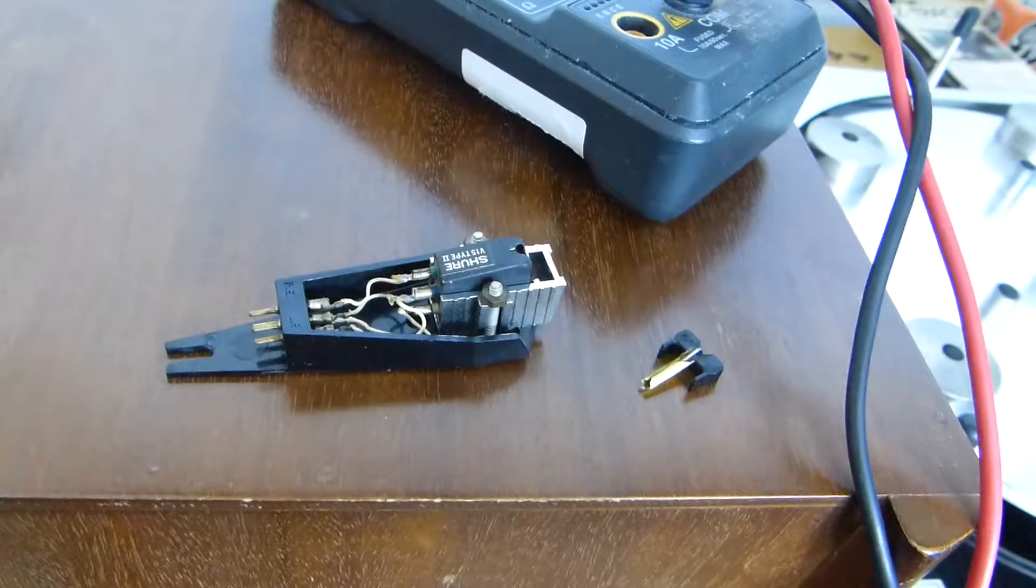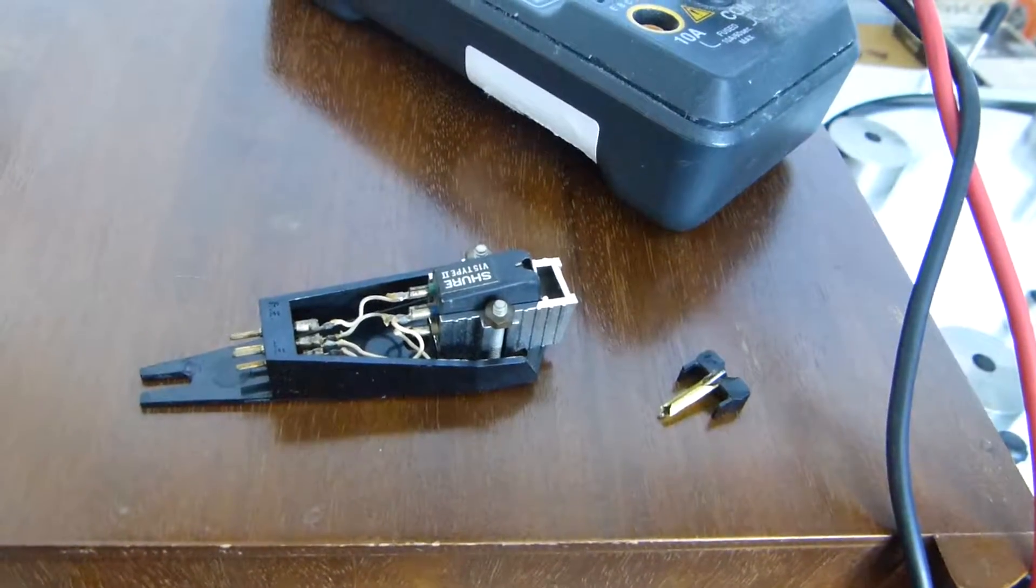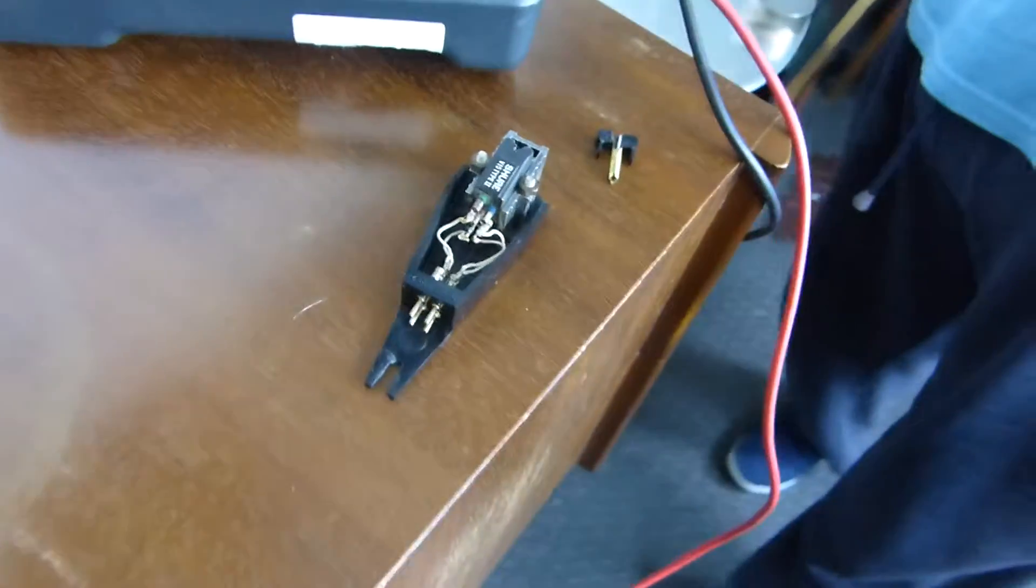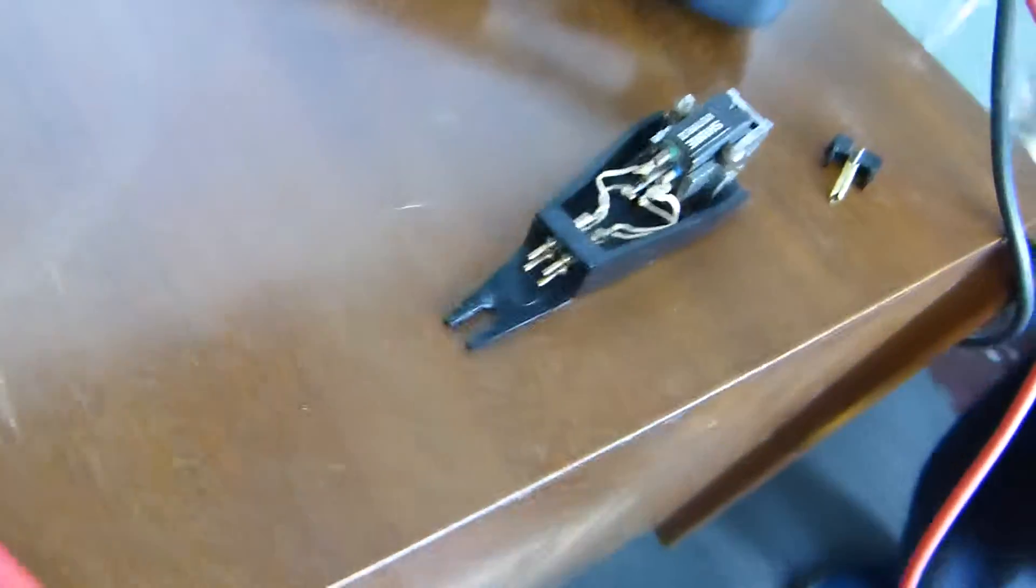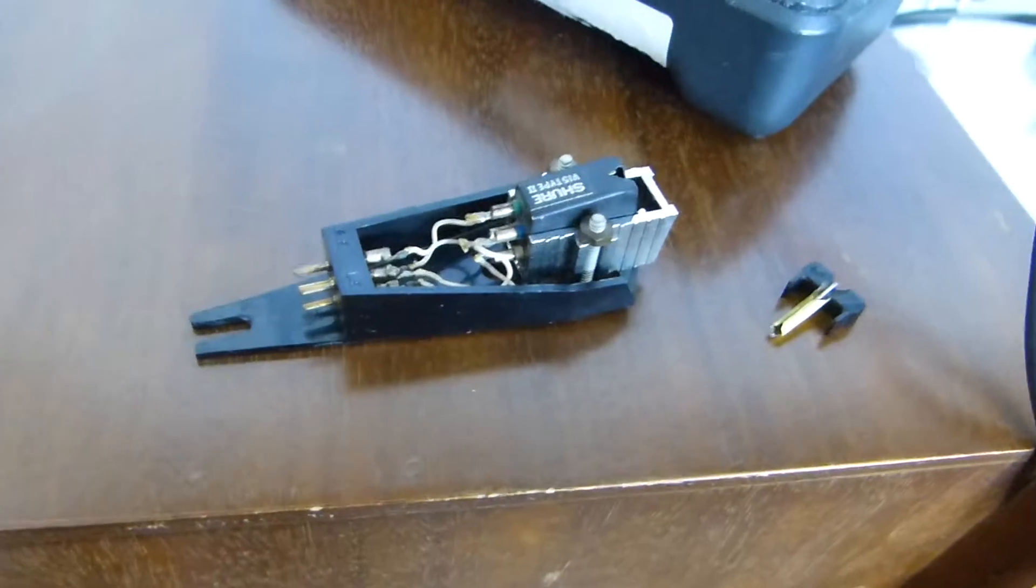This includes the shape and quality of the diamond tip, but also the compliance of the suspension. High compliance means low stiffness—it's very compliant, it moves easily. Low compliance means it's stiff.